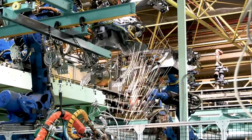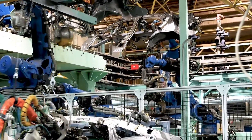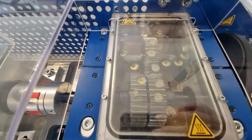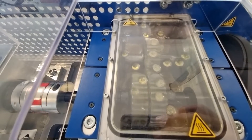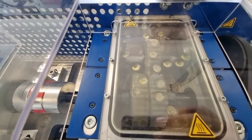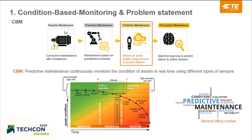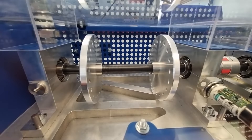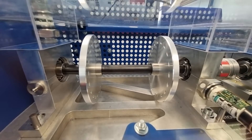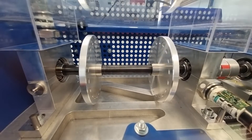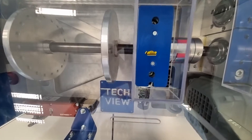The key to any successful predictive program in condition-based monitoring is to know when and why a critical asset may fail. Vibration analysis is one of the most important predictive tools to prevent breakdown time. This tool is proactively used to forecast failures on rotating equipment before a severe malfunction in a system appears.